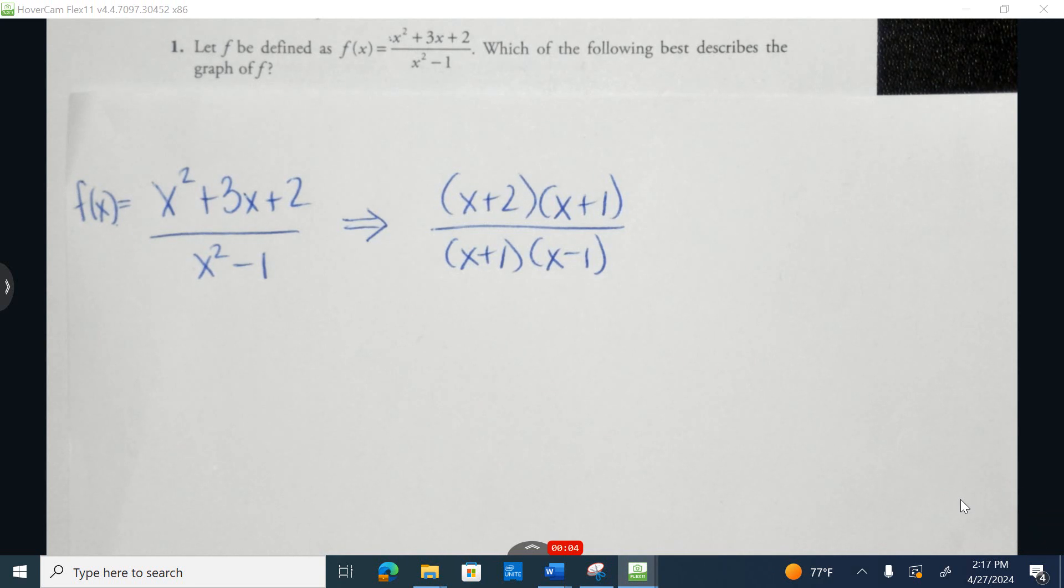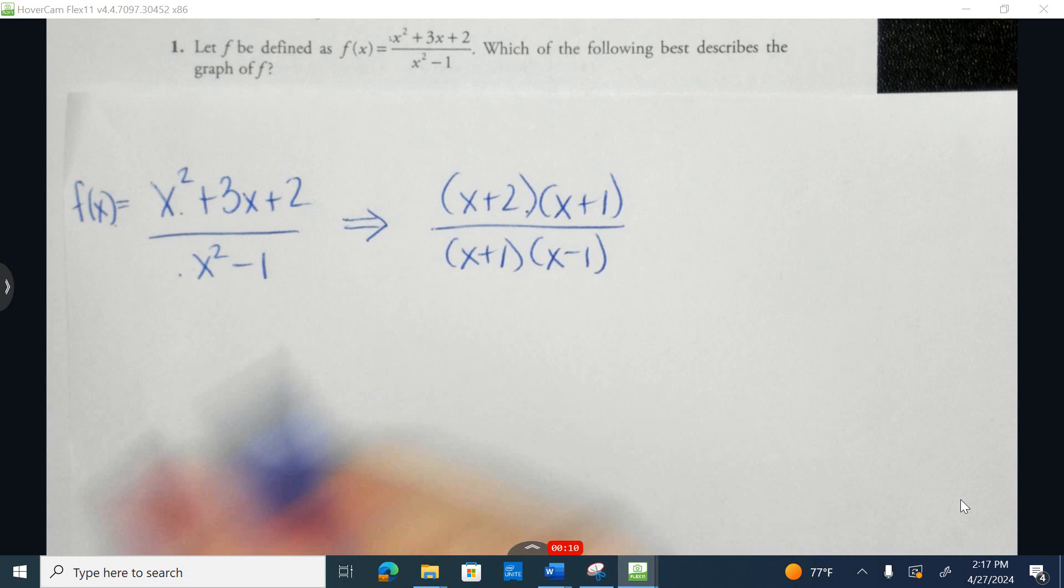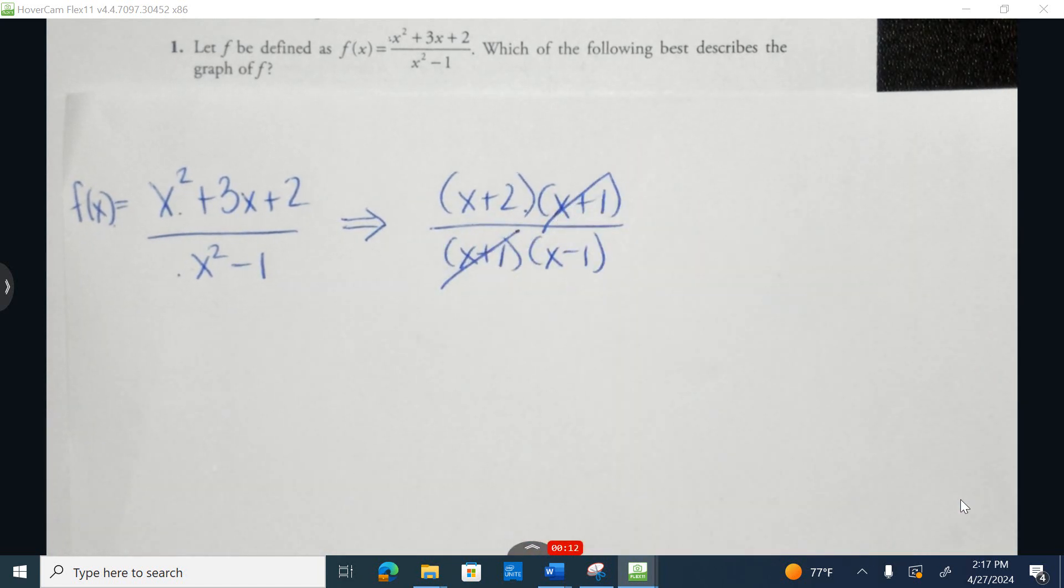Let f of x be defined by the following function, which best describes the graph of f of x. The first thing I did is I factored the numerator and denominator. And then I can see that I'm able to simplify those, turned into a 1 when we're simplifying.